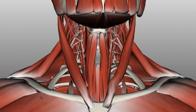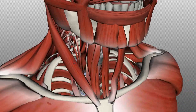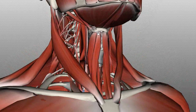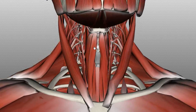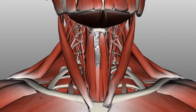To recap, there are four infrahyoid muscles. The sternohyoid and the omohyoid are superficial — the omohyoid is lateral to the sternohyoid, running from the scapula through the posterior triangle to insert onto the hyoid bone, with an intermediate tendon attaching to the medial end of the clavicle. Deep to these, you've got the thyrohyoid and the sternothyroid. Those are the four infrahyoid muscles you need to know.